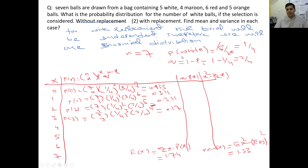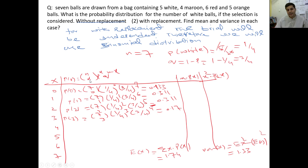For with replacement using binomial: n = 7 balls drawn. Probability of white = 5/20 = 1/4. Failure probability q = 1 - 1/4 = 3/4. The binomial probability distribution function is C(n,x) × p^x × q^(n-x). When x = 0: C(7,0) × (1/4)^0 × (3/4)^7. When x = 1: C(7,1) × (1/4)^1 × (3/4)^6 = 0.311.